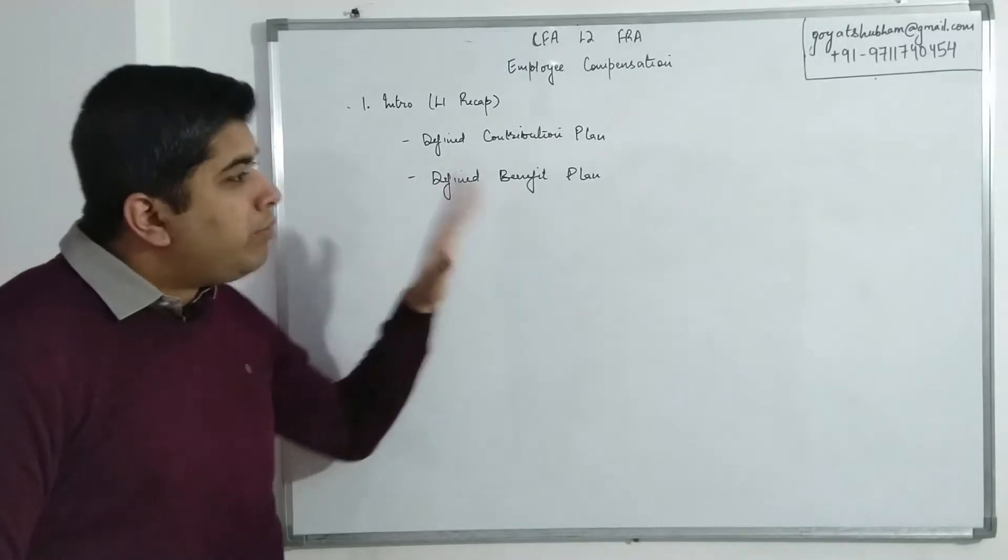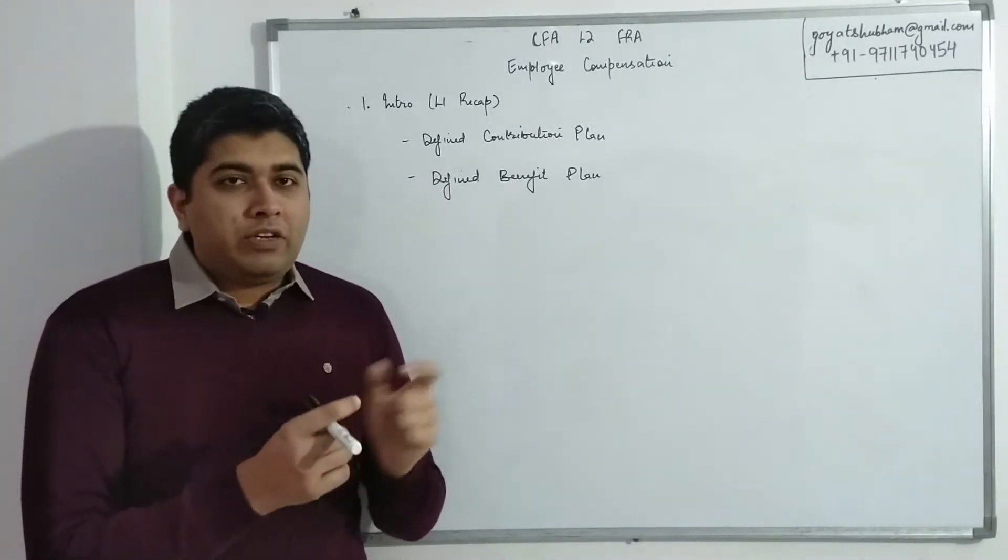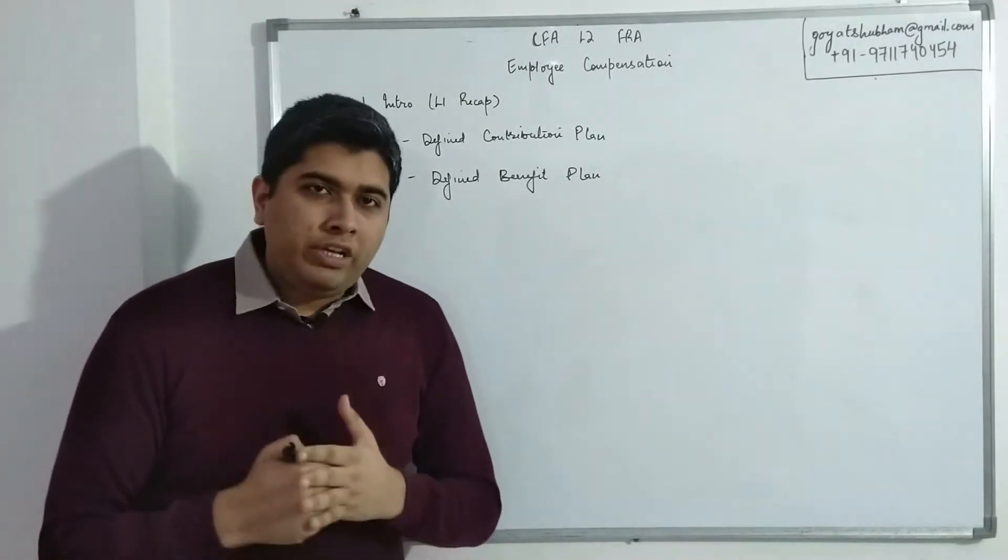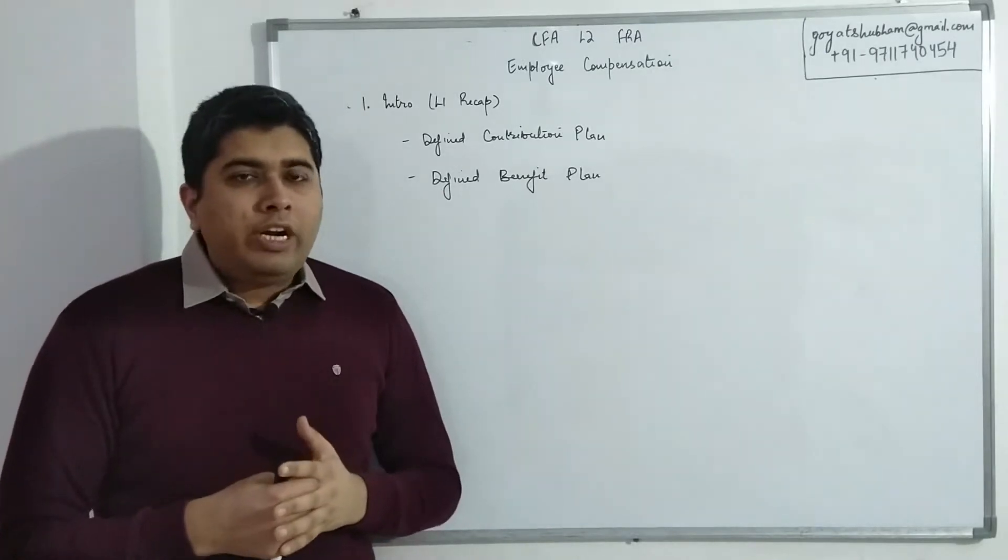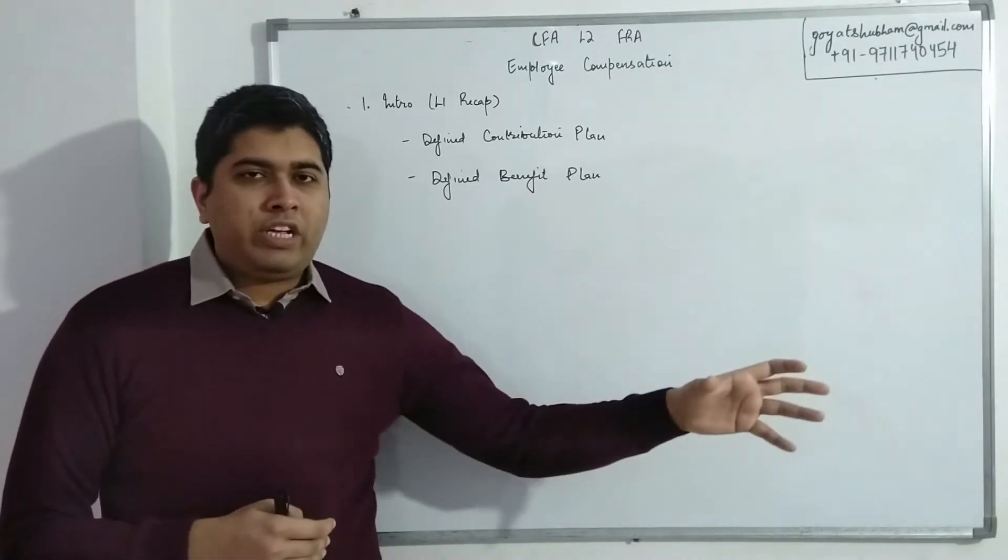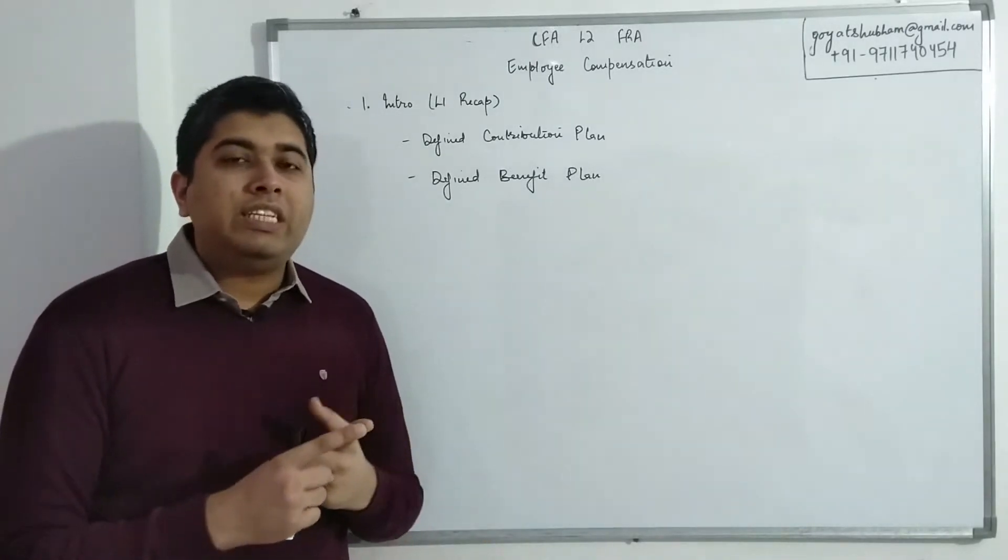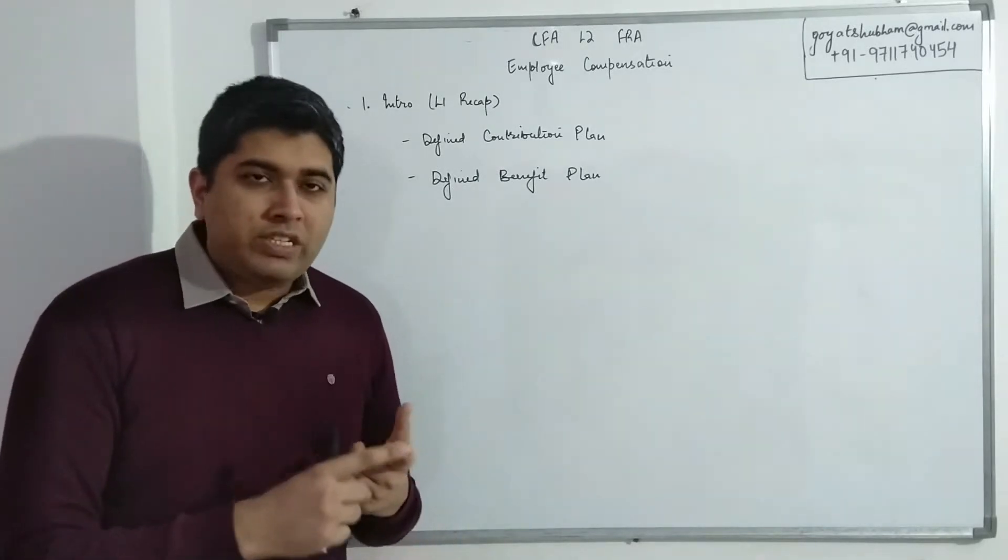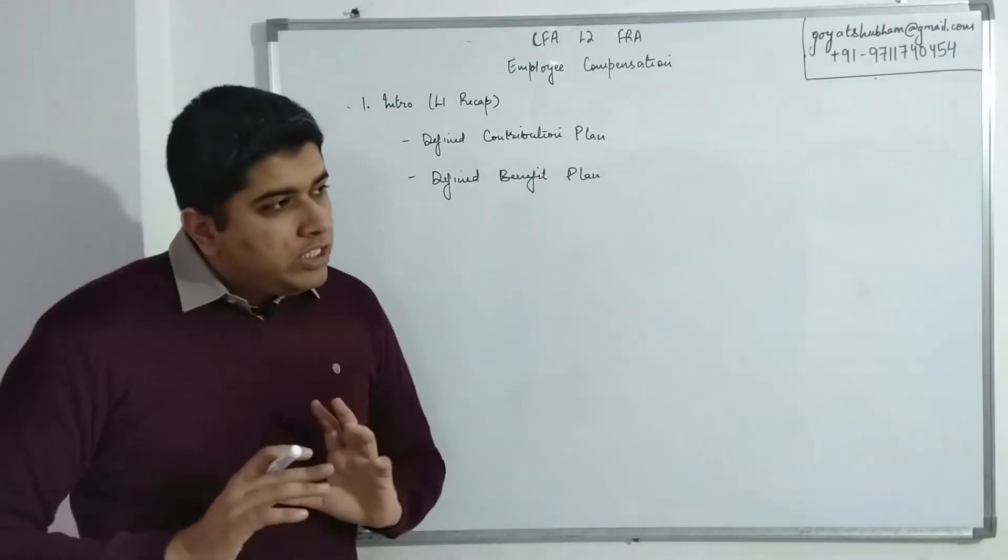So instead of employer focusing on how much he should pay right now into the pension account, he rather took on the obligation that when the employee retires, I will make a recurring amount, a regular payment to the employee as his pension post-retirement. That's why this is also known as post-employment benefits. So as a result, once the employment ends, now the employer will be responsible to make certain payments. Let's say I have an employee whose age is 40 years old and he would retire at the age of 60.